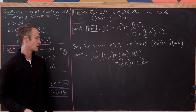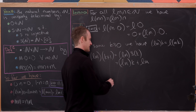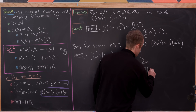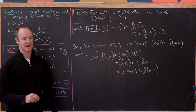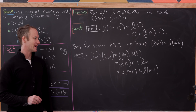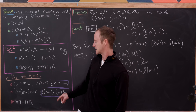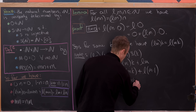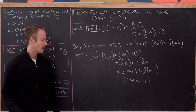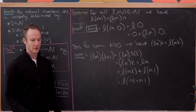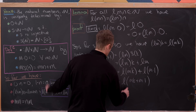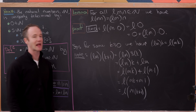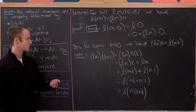Applying the induction hypothesis, we write this as l times (m·k) plus l times (m times 1), where I've beefed up the second term. Now I can use the companion distributive rule to factor out l, giving l times (m·k plus m times 1). Taking m out of the inside, that leaves l times m times (k+1), which is exactly where we needed to end up to finish this off.